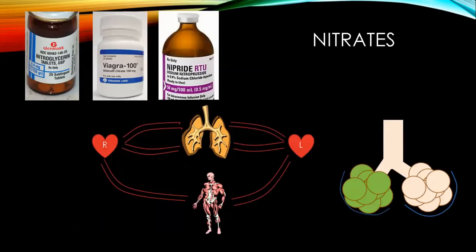Medically, nitric oxide is part of a group of drugs called nitrates, and all of these cause vasodilation. Drugs of this type include nitroglycerin, used for chest pain because of its tendency to dilate the coronary arteries; Viagra, used for its vasodilating properties; and nitroprusside, which is given to vasodilate and lower blood pressure during a hypertensive crisis.